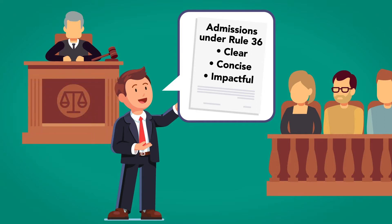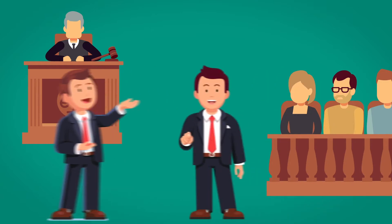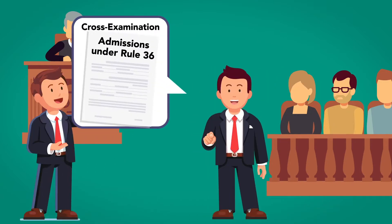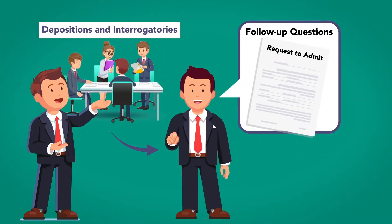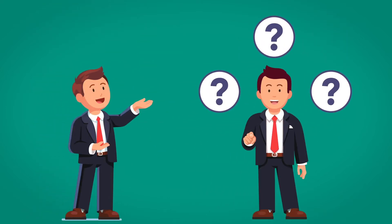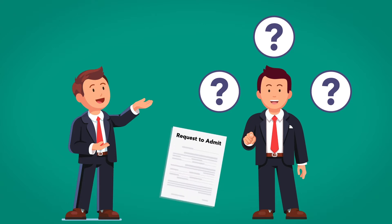Since they are read to the jury, the language in which they are written should be clear, concise, and impactful. The admission can also be used in cross-examination or as other evidence to discredit or contradict a witness or party. Requests to admit can also be used to pose follow-up questions after depositions and interrogatories if there is something that counsel is still unclear about or forgot to ask. Questions that linger after other forms of discovery are completed can be turned into requests to admit, forcing the other party to clarify the issue.